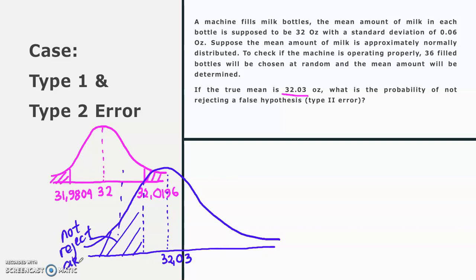In other words, not rejecting area while it is a false hypothesis here because the true hypothesis is 32.03. This is the area that we want to find, the area that we conducted a Type 2 error for not rejecting a false hypothesis. So how to find this Type 2 error?